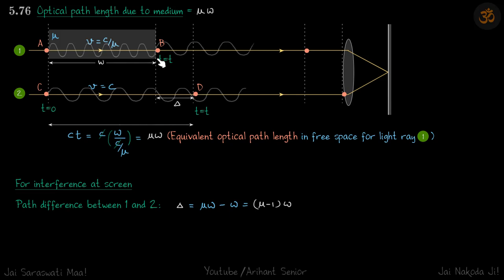So the equivalent optical path in free space is μw. For interference at the screen, the path difference between ray 1 and ray 2 is μw minus w, which gives a path difference of (μ − 1)w.